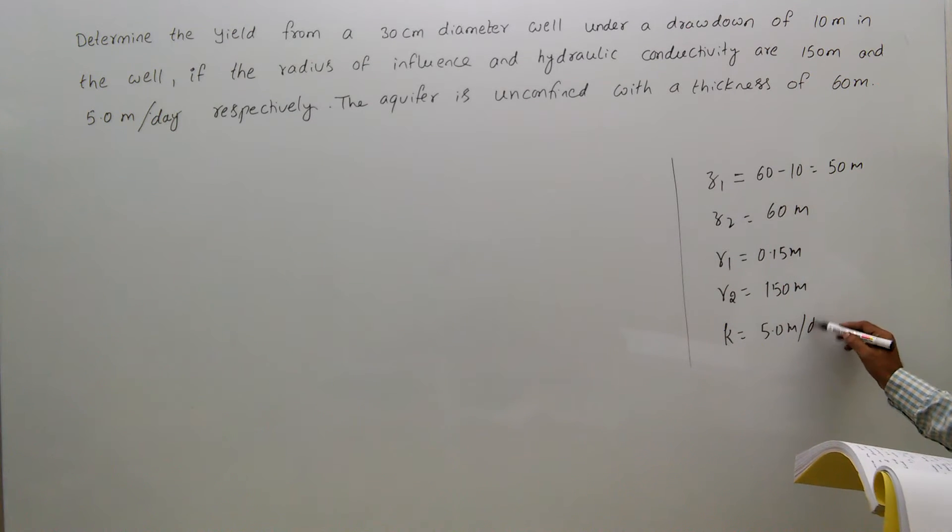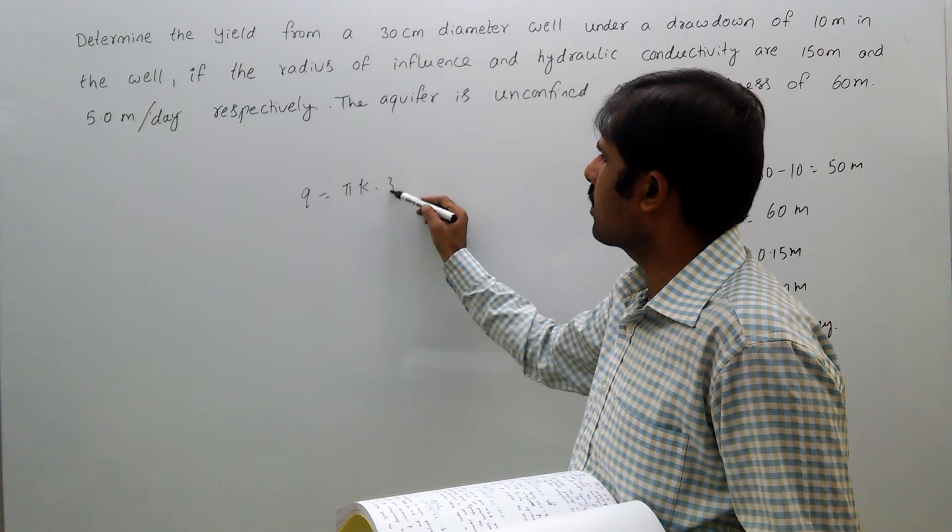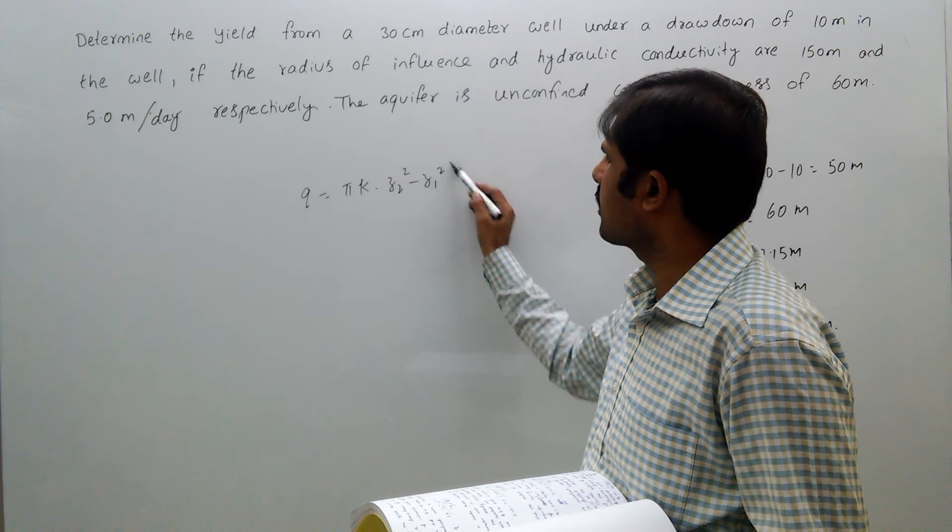Substituting into the formula: q equals pi k (z2 squared minus z1 squared) divided by log of (r2 by r1).